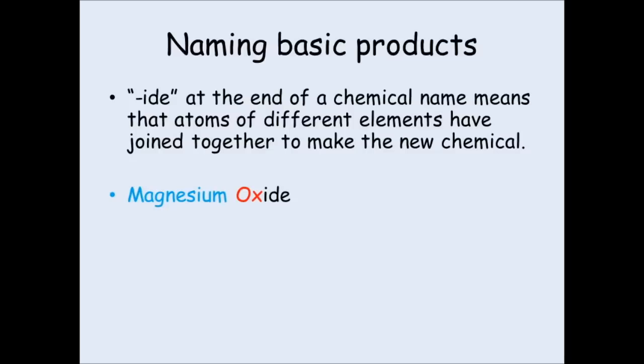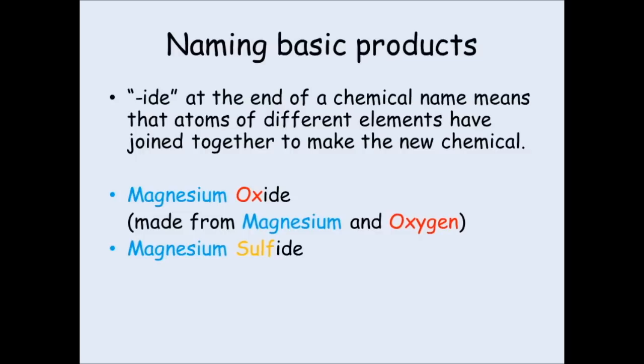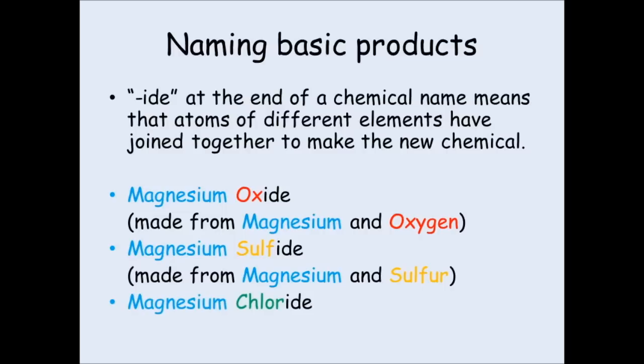So for instance, magnesium oxide is when magnesium and oxygen have joined together to make a new chemical, which is magnesium oxide. So you can see in the chemical name that it contains magnesium and oxygen, and the -ide at the end means they're joined together. Magnesium sulfide means that magnesium and sulfur have joined together. You can see magnesium and sulfur are in the compound, and -ide means they're joined together. So a magnesium atom is joined to a sulfur atom.